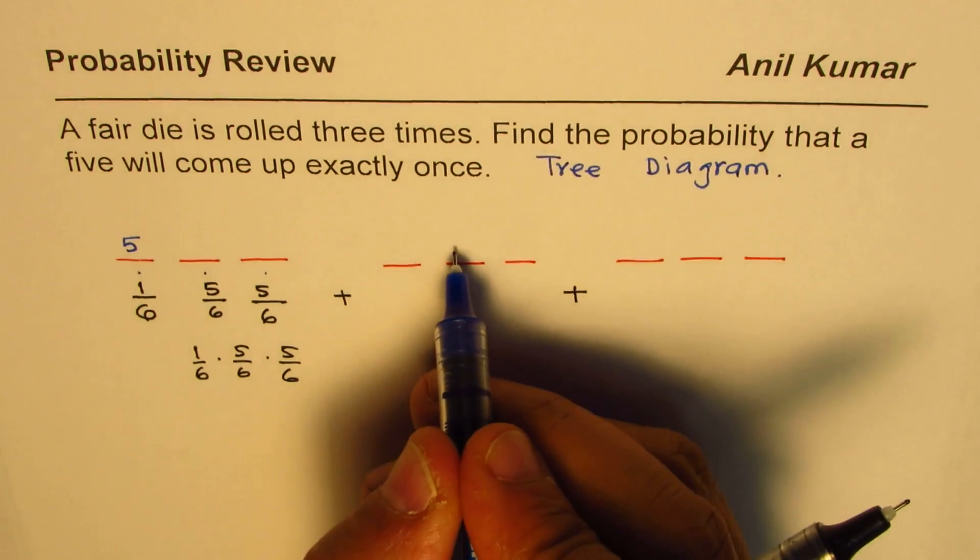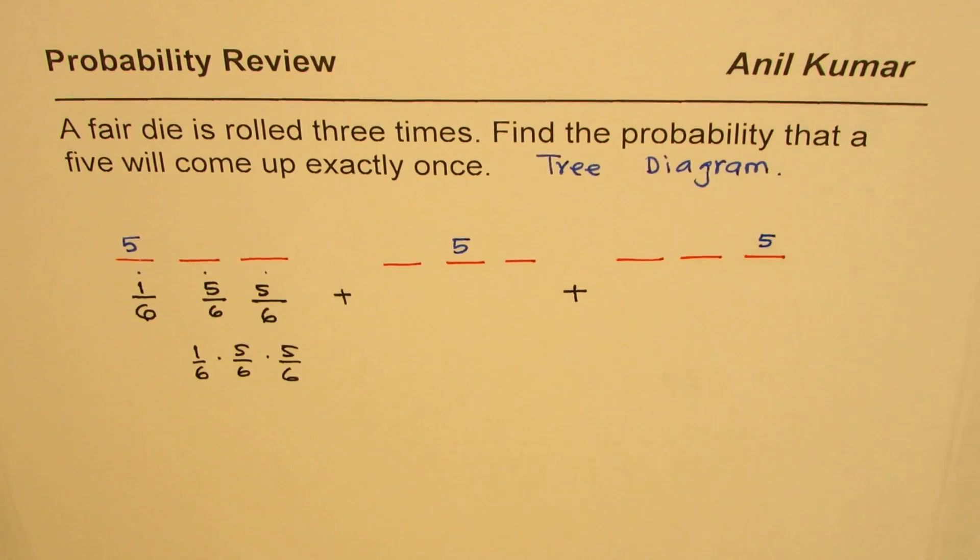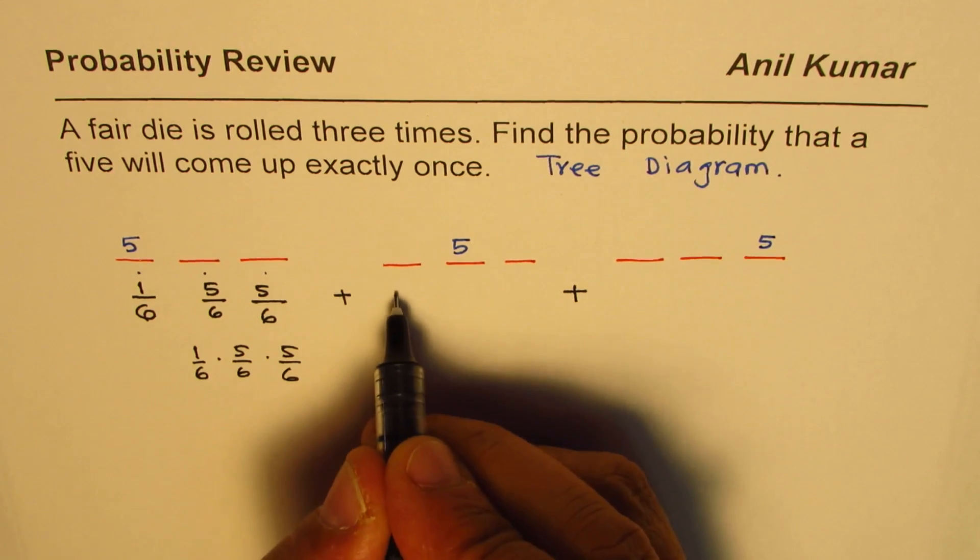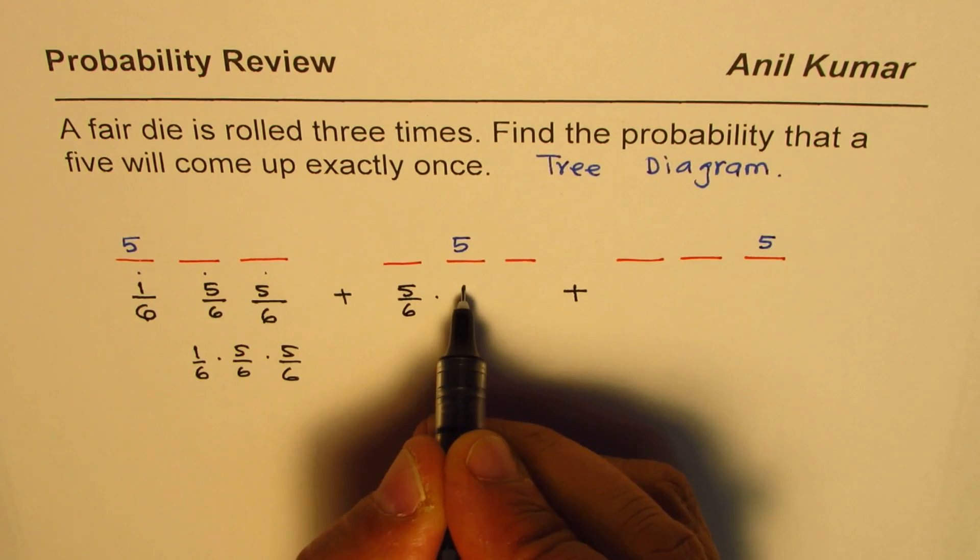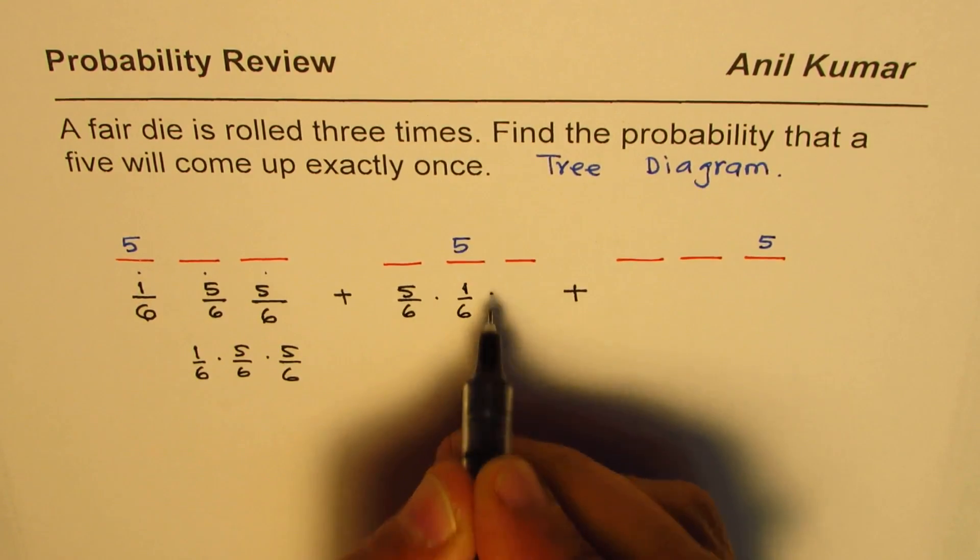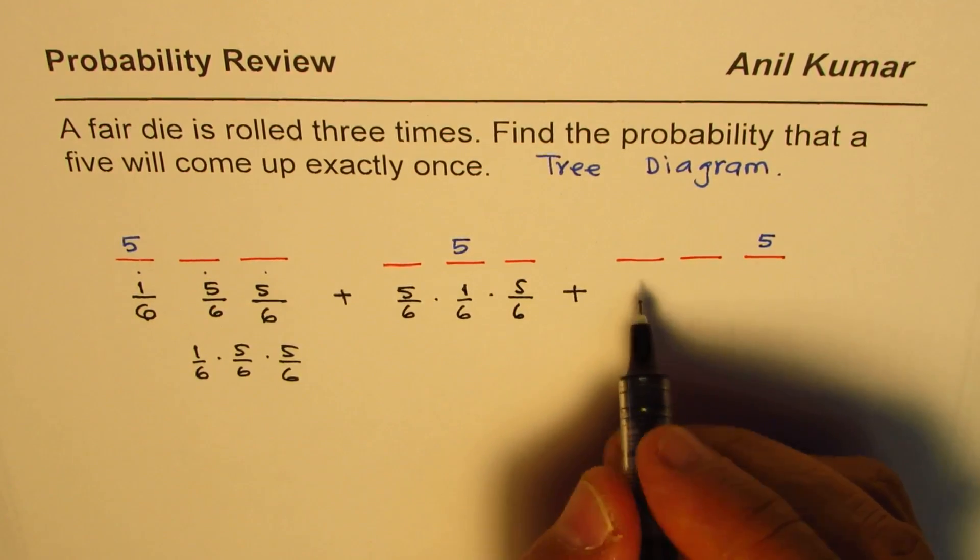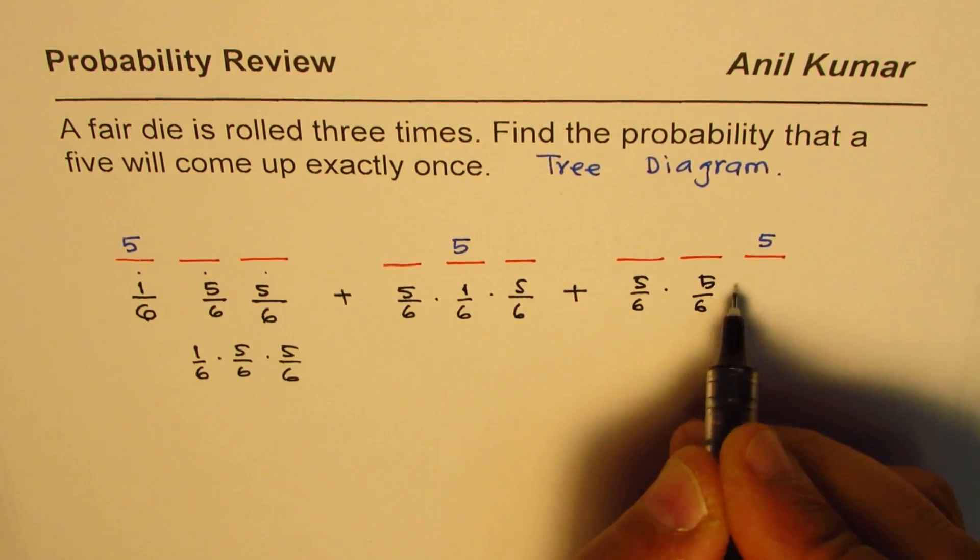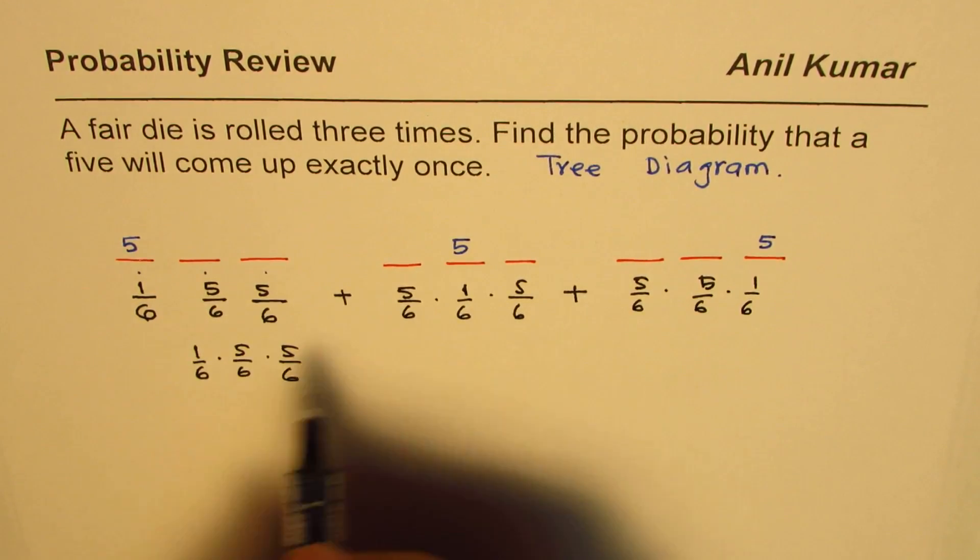Now in the second case, five could come in the second die, and here it could come in the third die. So the probability will be, here we could get any other number so it'll be five over six times there's only one out of six to get us five and five numbers could fill up that space. Similarly here it will be five over six times five over six times one over six. So it is kind of same thing three times.